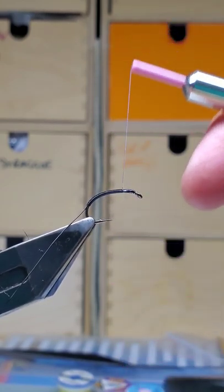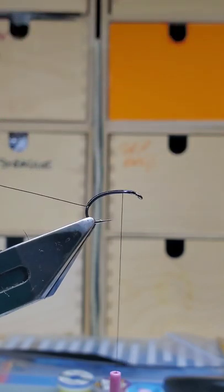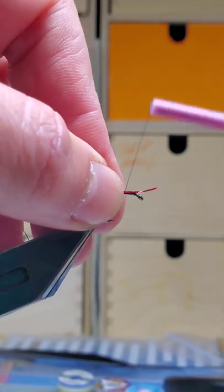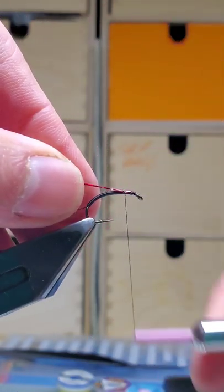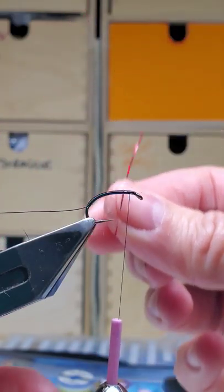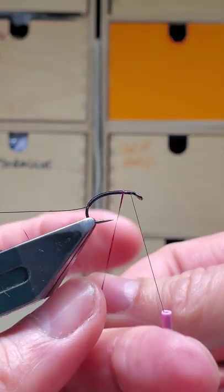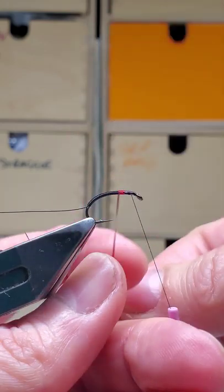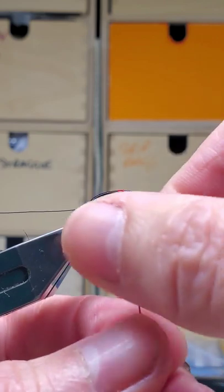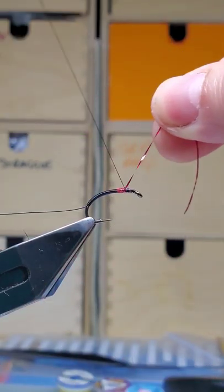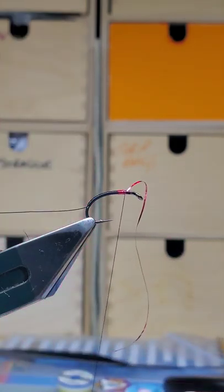Give yourself about four or five mil from the eye. Take a length of small red holographic, catch that in on the side, and create a small hot spot. Put down once and then back up, and then catch that in.